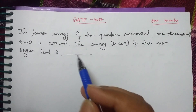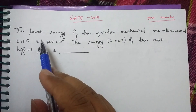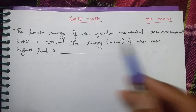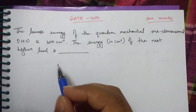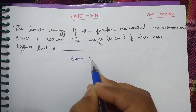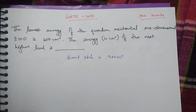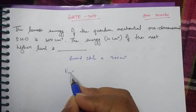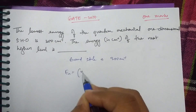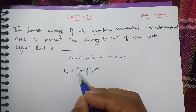The second question was also for one mark, but a numerical question. The lowest energy of a quantum mechanical one-dimensional simple harmonic oscillator is 300 cm⁻¹. The energy of the next higher energy level is to be found. The energy formula for a 1D simple harmonic oscillator is Eₙ = (n + ½)hν, where n is the quantum number.